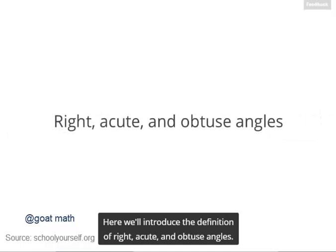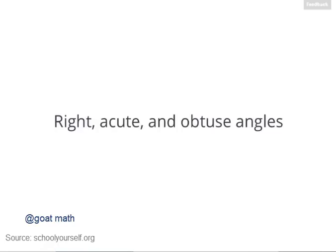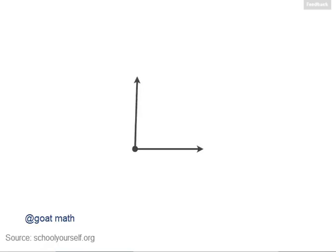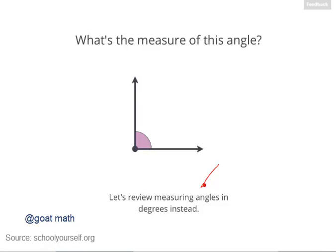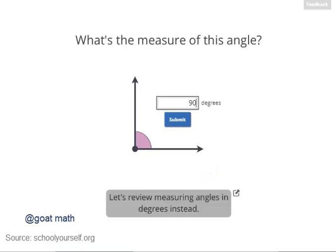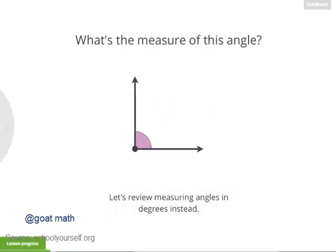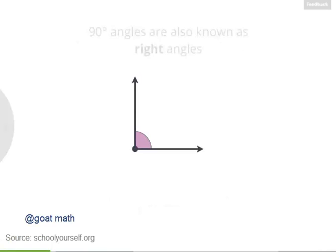Here we'll introduce the definitions for right, acute, and obtuse angles. But first, let's make sure you remember how to measure angles in degrees. So what's the measure of this angle here? If you're not sure, click down here to review. Exactly right, this angle is 90 degrees.